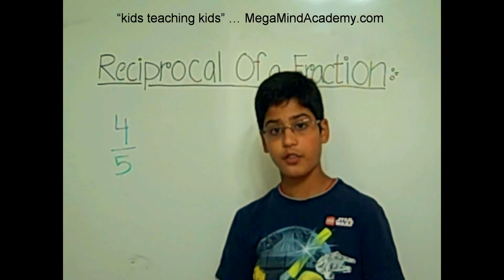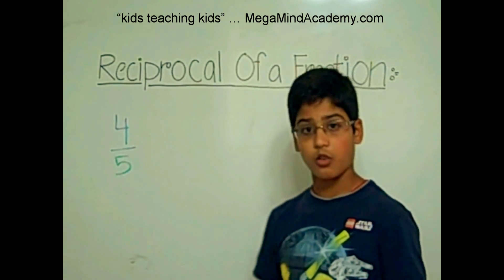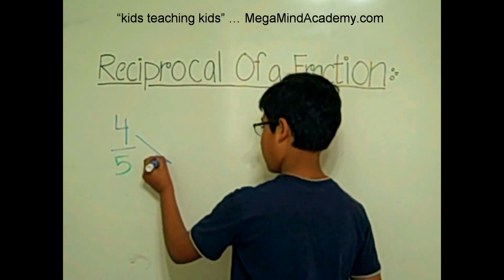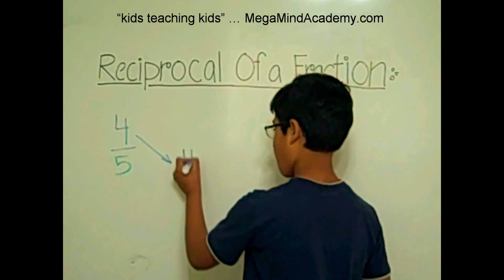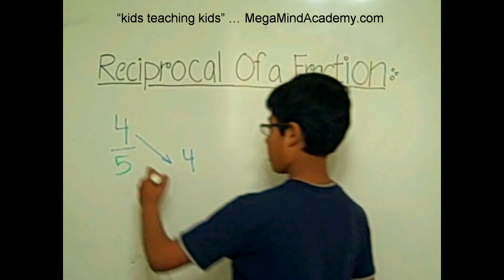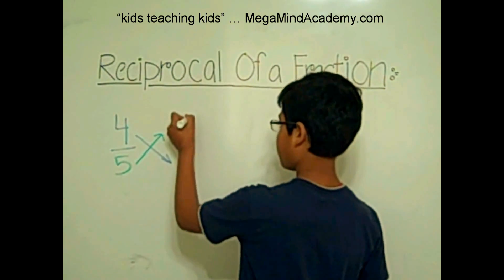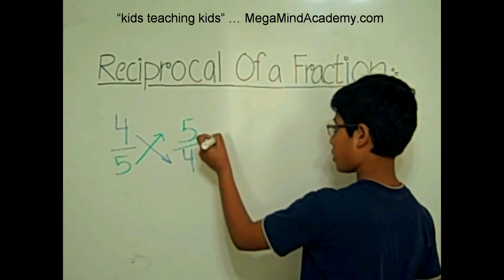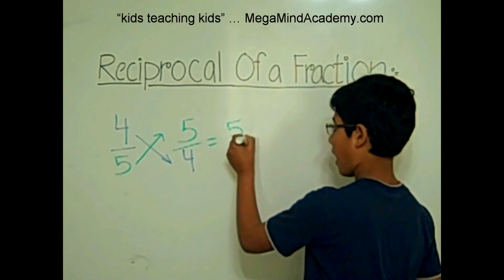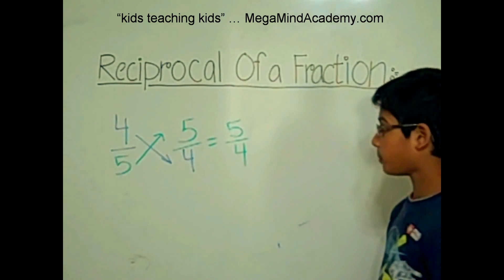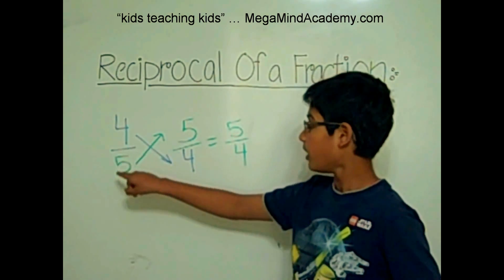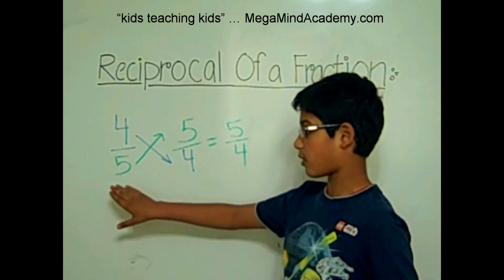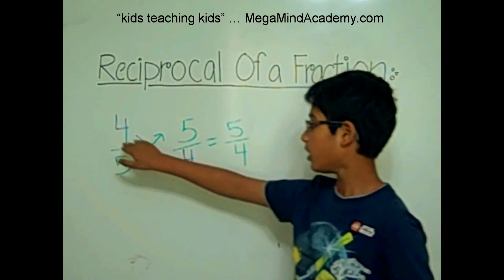So, let's find the reciprocal of 4 fifths. We're going to make the 4, which is the numerator, come down and become the denominator. And the 5, which is the denominator, will come up and become the numerator. So, the change is made, and the reciprocal is 5 over 4, because the 4 used to be a numerator and the 5 used to be a denominator, and we flipped it over. Now the 5 is the numerator and the 4 is the denominator.